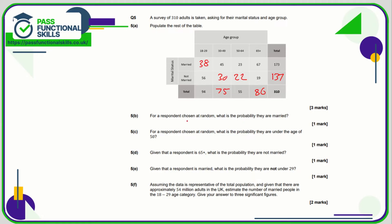For part b, for a respondent chosen at random out of 310, what's the probability they are married? The married total is 173, so 173 out of 310. For part c, for a respondent chosen at random out of 310, what's the probability they are under 50? Those groups together give 94 plus 75, which is 169 out of 310.